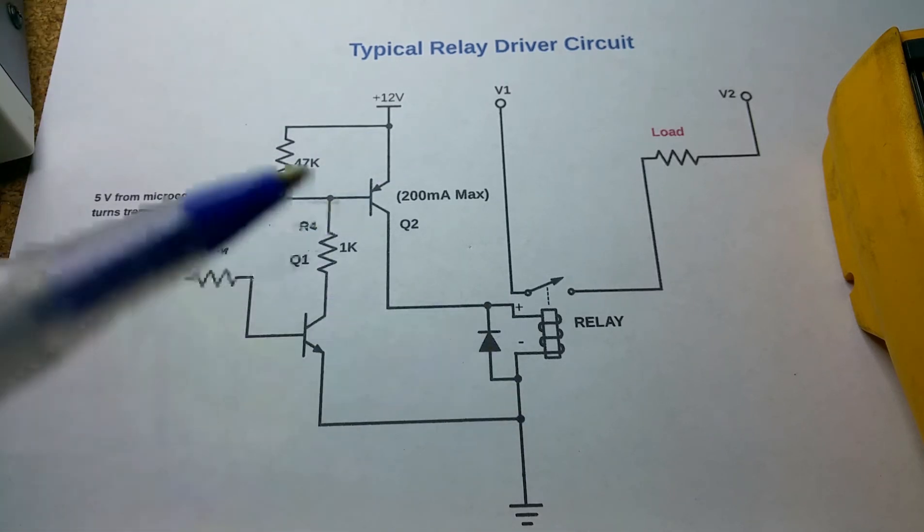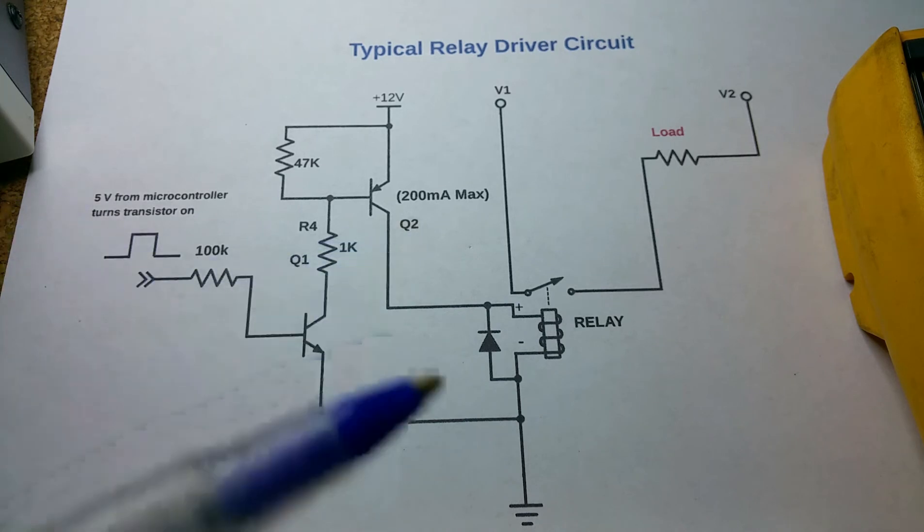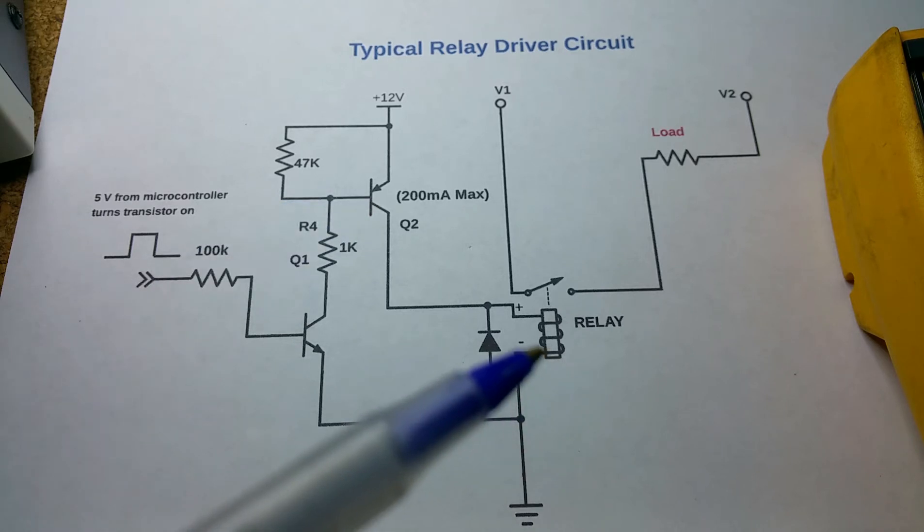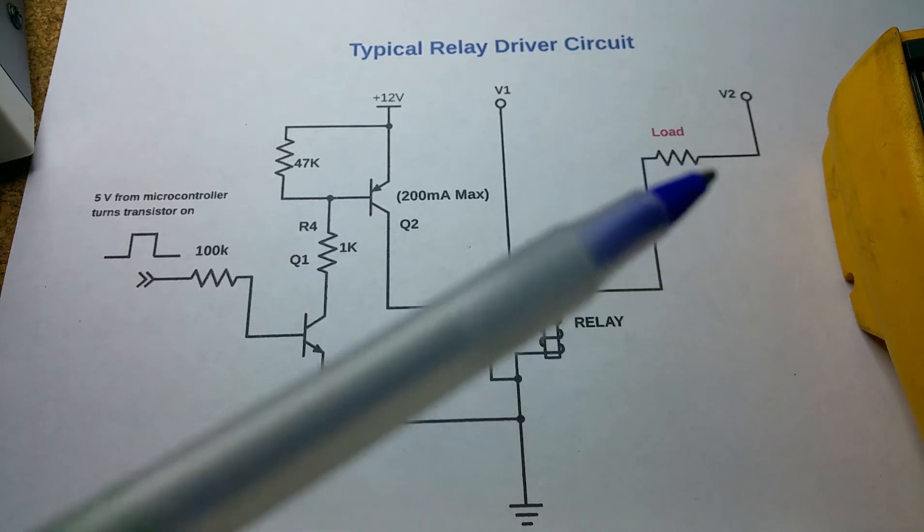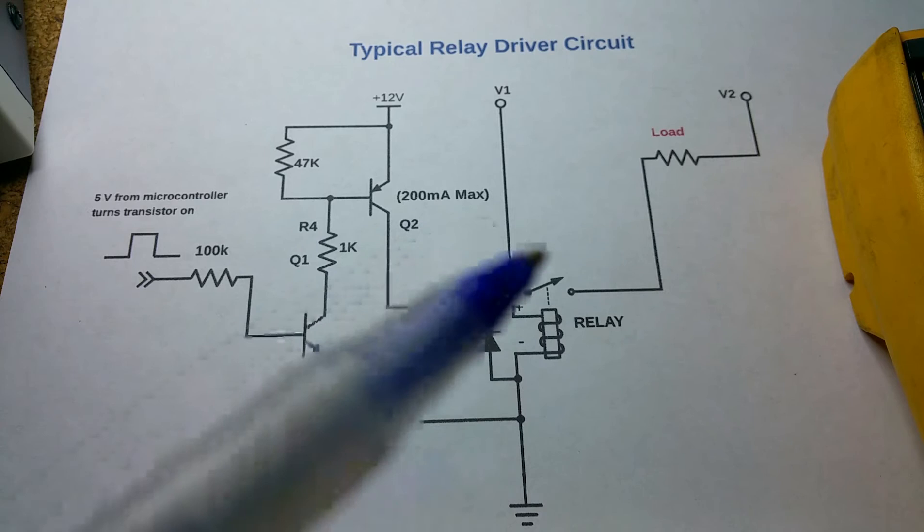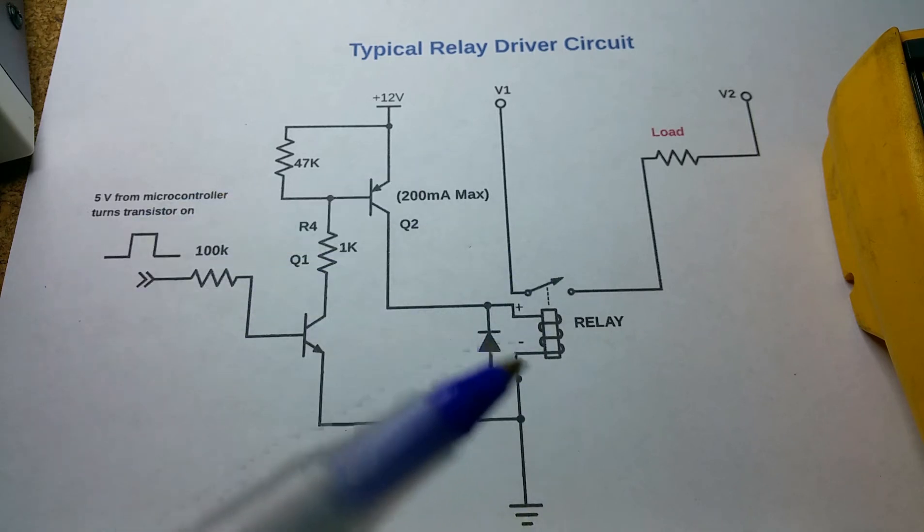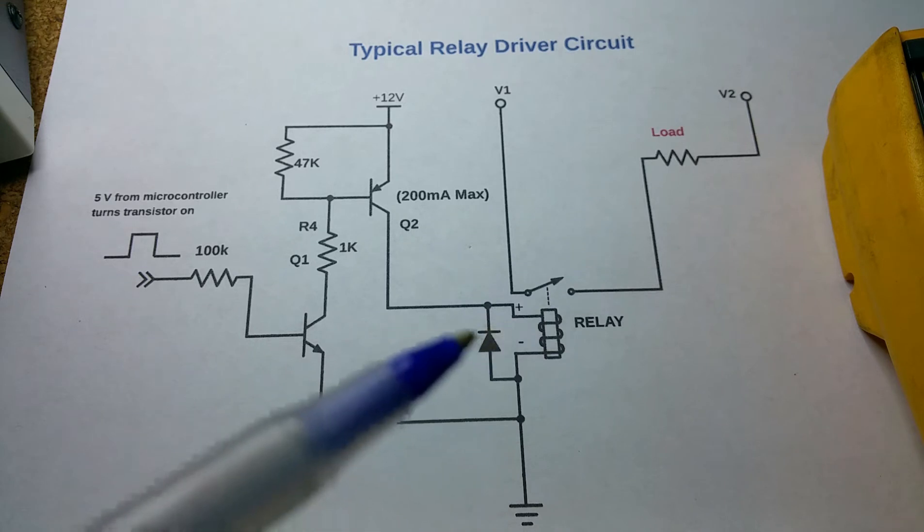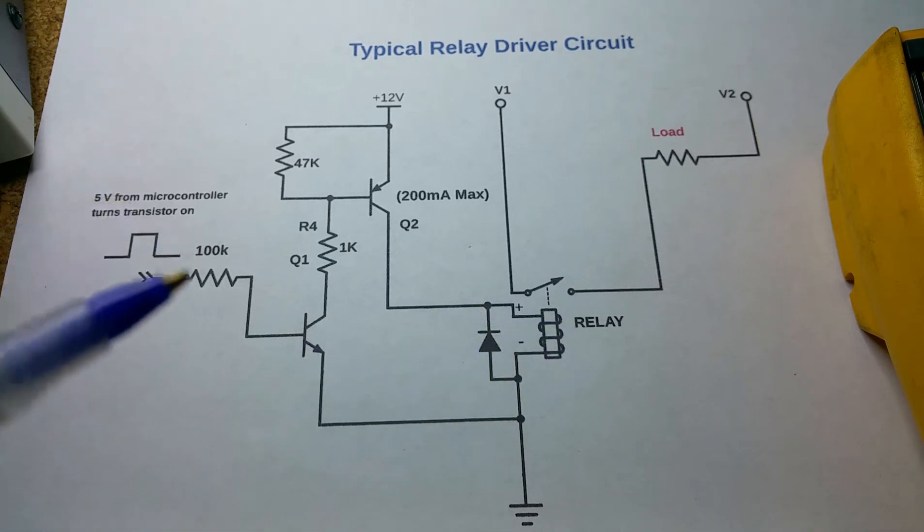Another thing that could happen is this transistor could short out on its own. If that happens, it's gonna leave this relay on and that bake element or whatever is just gonna stay on, which is obviously not good either. Those are the main things that can happen to this type of circuit. The failures typically happen where the higher current and higher voltages are, and not typically down in this area over here, unless the microcontroller for some reason just goes out.